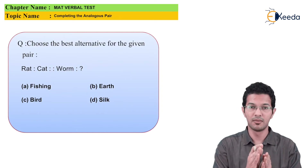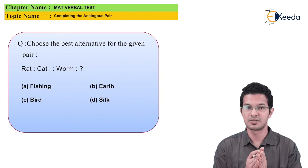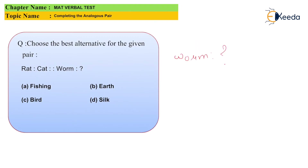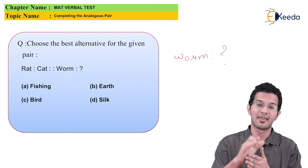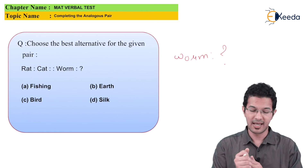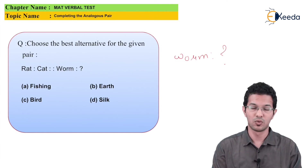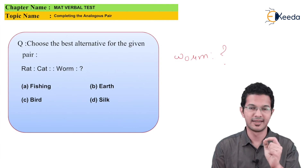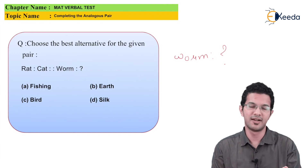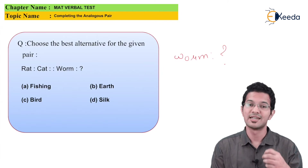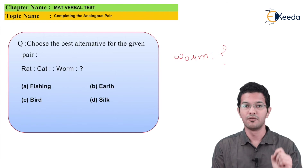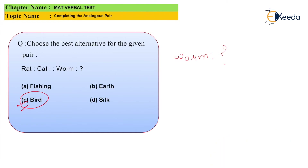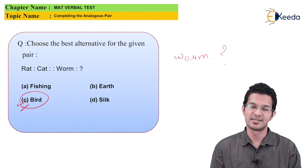In the second pair, Worm is related to what? Let us check the options. We know that cat eats rat. So looking at the options — fish, earth, bird, or silk — we can say that bird eats worms. Hence, the answer is Option C, which is Bird.